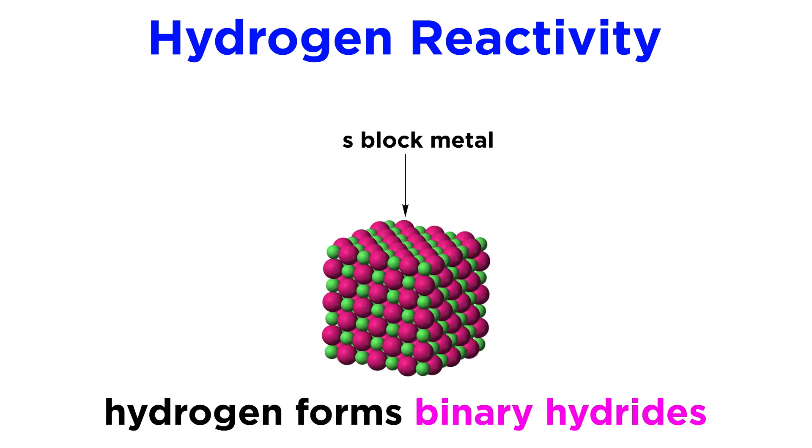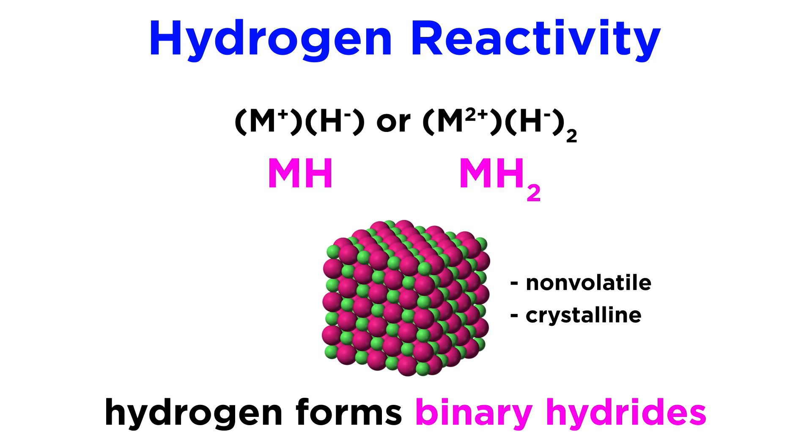Hydrogen will frequently form binary hydrides with S-block metals. These are non-volatile and crystalline, taking on the form MH or MH2, depending on the oxidation state of the metal.